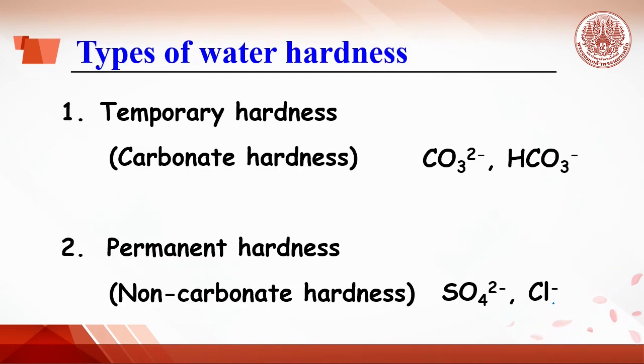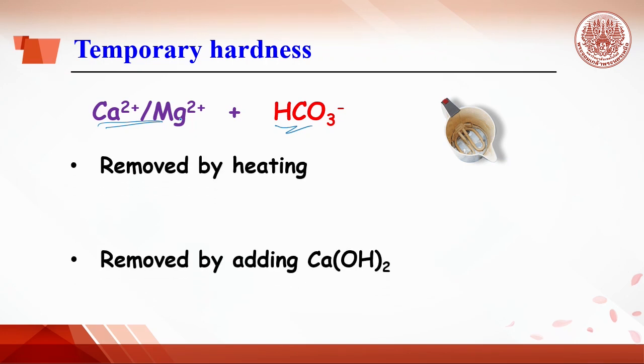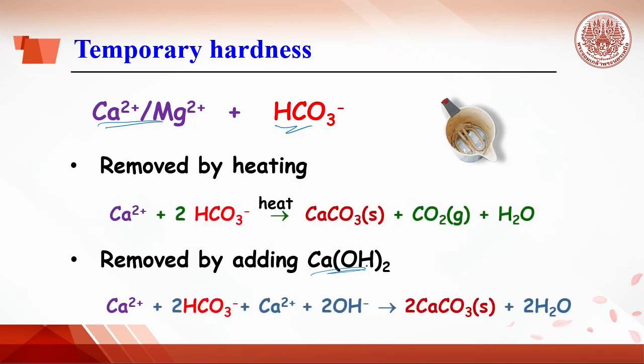Temporary hardness and permanent hardness, or carbonate hardness and non-carbonate hardness. Temporary hardness is due to the presence of bicarbonate together with calcium and magnesium ion. This type of hardness can be removed by either heating or adding calcium hydroxide, leading to the precipitation reaction of calcium carbonate. A simple example of temporary hardness is the deposition of calcium carbonate scale inside the kettle.